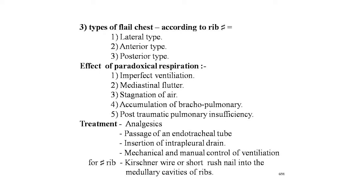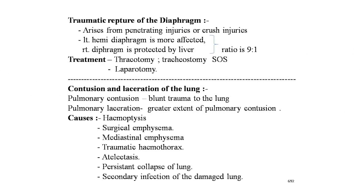Treatment of flail chest: analgesics should be started; passage of endotracheal tube; intercostal drainage; mechanical and manual control of ventilation. For rib fractures, Kirschner wire (K-wire) or Rush nail into the medullary cavities of the ribs should be done. Traumatic rupture of the diaphragm may occur from penetrating or crush injuries to the lower chest or upper abdomen. Left hemidiaphragm is more commonly affected; the right is protected by the liver. The ratio of left to right diaphragm trauma is 9:1. Treatment: thoracotomy, tracheostomy if needed, and laparotomy.